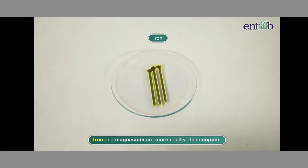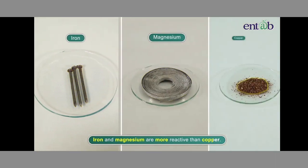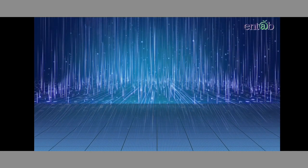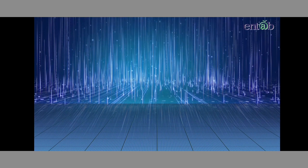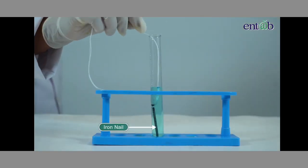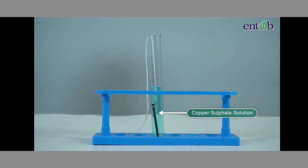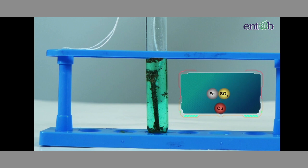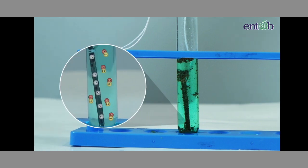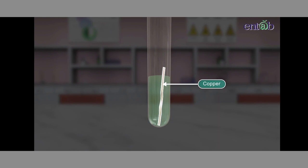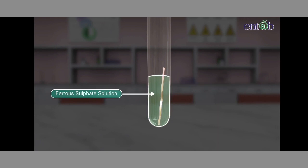Iron and magnesium are more reactive than copper, so they replace copper from its salt solution. When an iron nail is placed in copper sulfate solution, the blue color of the copper sulfate disappears as iron replaces copper from the solution. The copper metal formed in this reaction creates a red-brown layer on the iron nail.